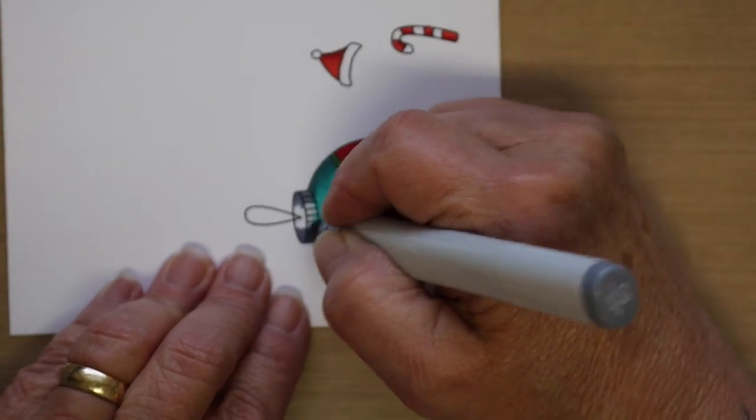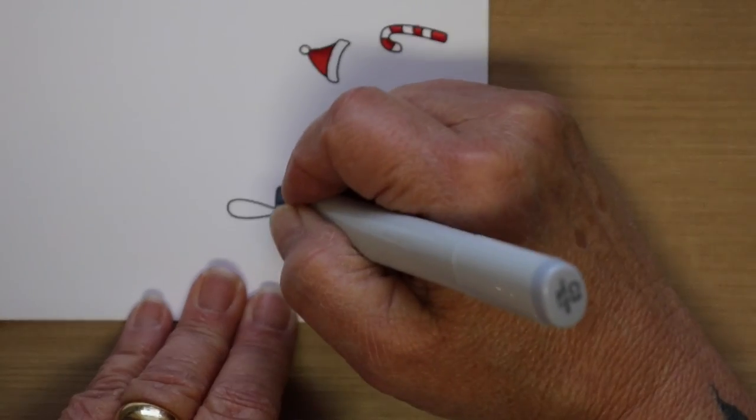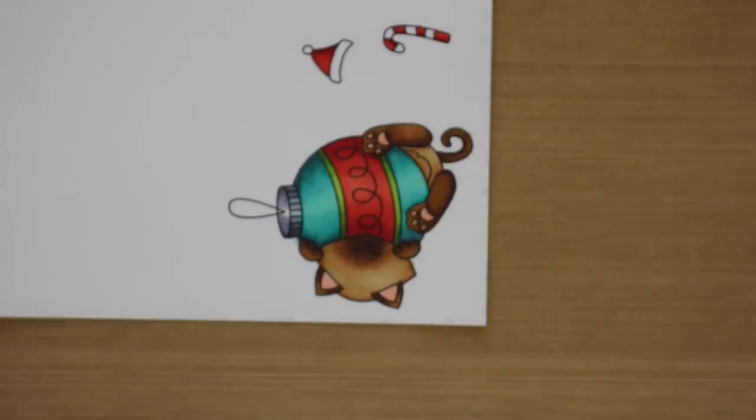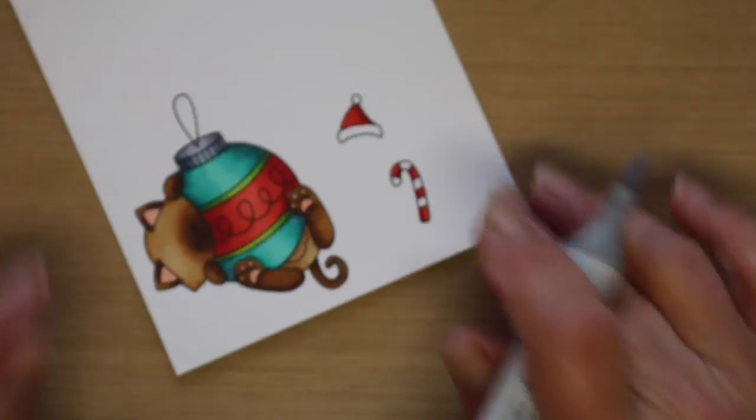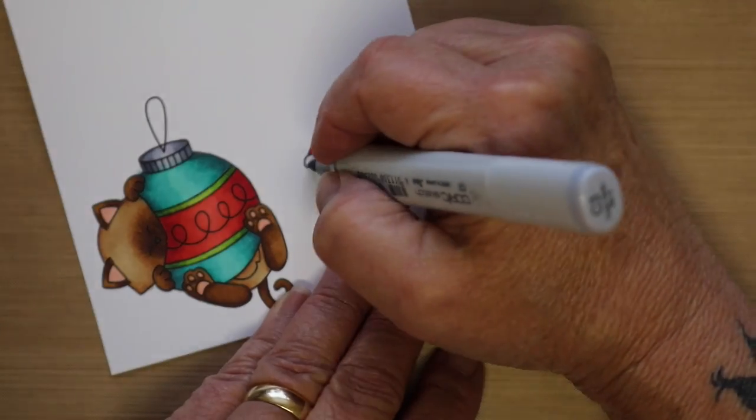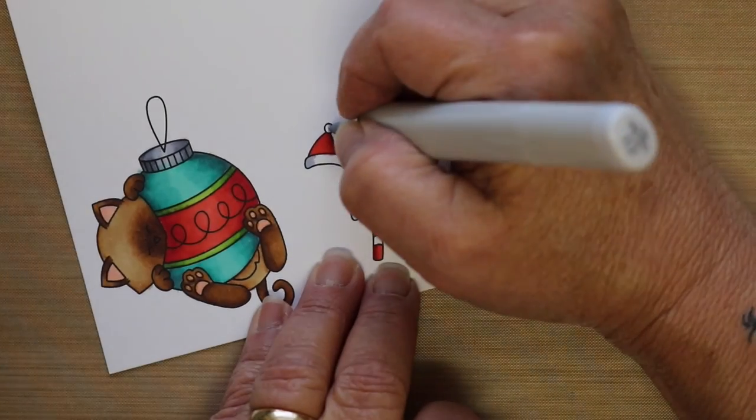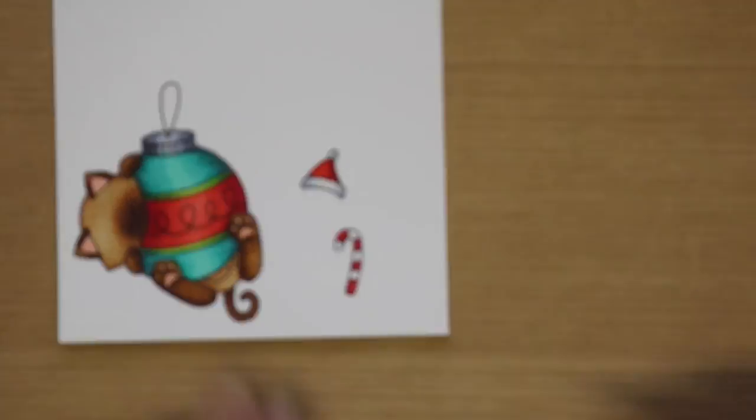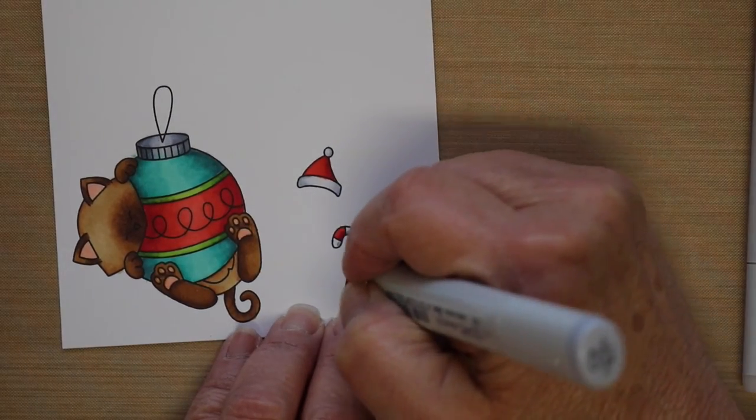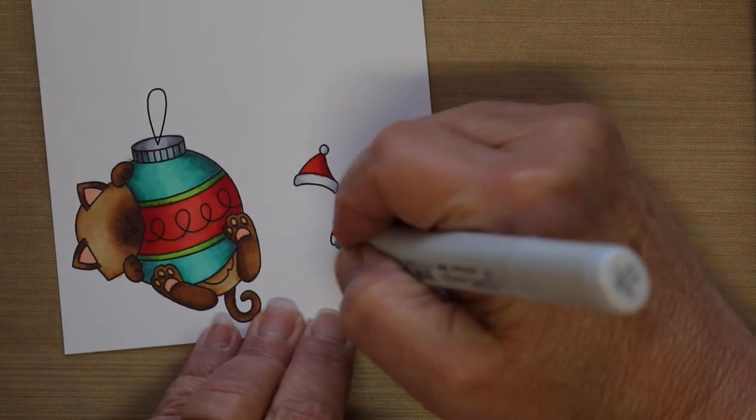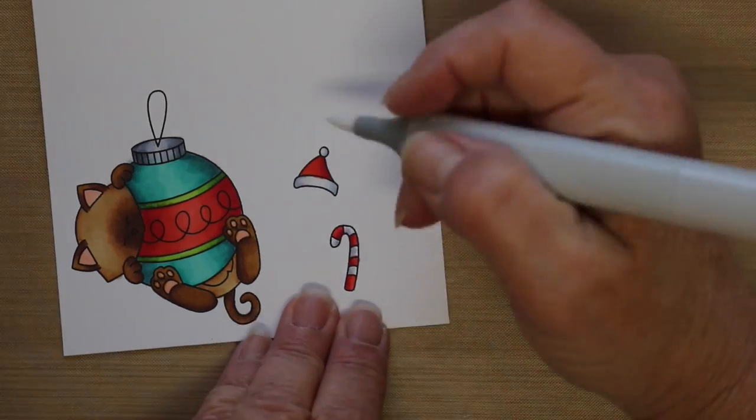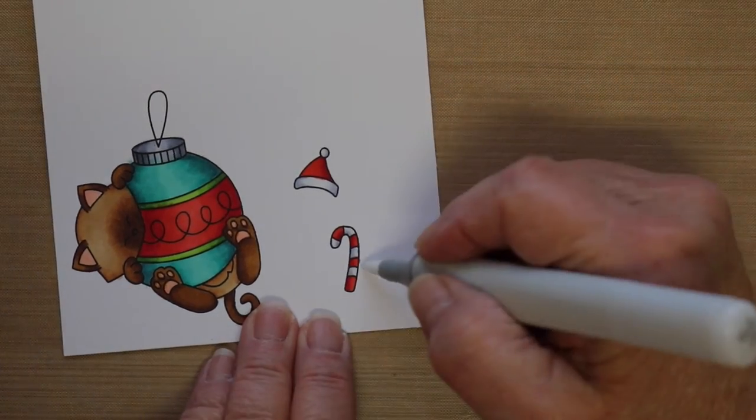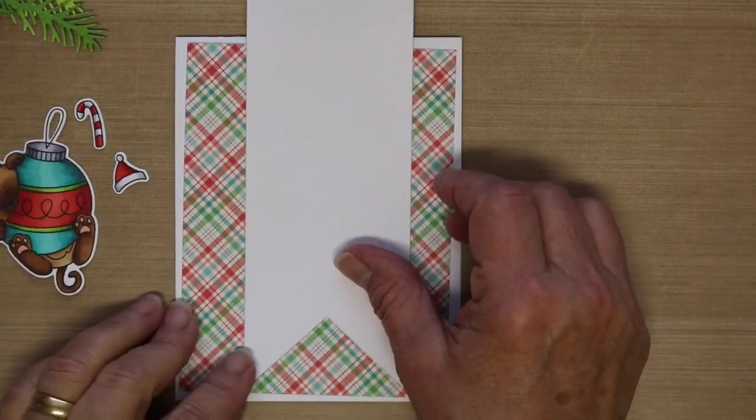And for the top of the ornament, I'm using my Cool Grays. So I'm using the C5, the C3, and the C1, and I'm going to do the same with the white part of the Santa hat and the candy cane. Well actually, I just used the C3 and the C1 on those, and then blended them out with my Colorless Blender. And then went around and cleaned up any little spots that seeped out.